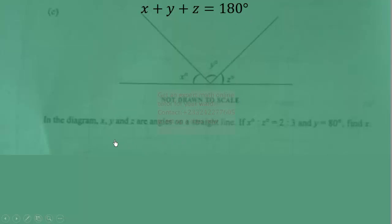Now, what else can we get from the question? We're told that y is equal to 80 degrees. So let's put y here: x + 80° + z = 180°. Can we simplify this? Yes, let's subtract 80 from both sides. Then we get x + z = 180° - 80° = 100°.